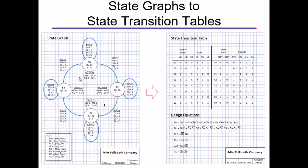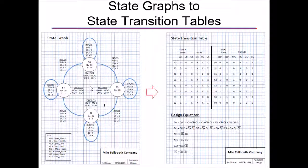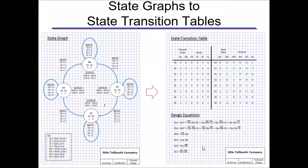The more states you have, the more flip-flops are required. For example, building a four-state machine (0, 1, 2, 3) requires two flip-flops, because with two flip-flops you can count from 0 to 3. If you add another state, you need another flip-flop — with three flip-flops you can have up to eight states. From the state graph, you create the state transition table, then derive equations, and from those equations you design the actual circuit.